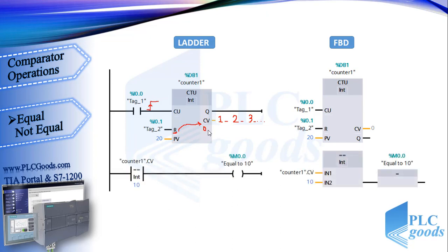Now let's see the first comparator instruction: equality. For each comparator instruction we must determine the type of data which are going to be compared. Here I select integer like my counter. This line compares CV value of my counter, which is named counter 1, with 10. So when the counter value is equal to 10, this output will be on. Also on the right side you can see its FBD program.